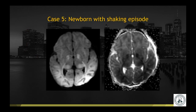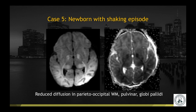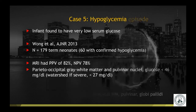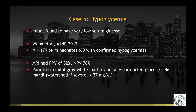Case number five is a newborn with a shaking episode. Diffusion and ADC map demonstrate reduced diffusion in the parietal and occipital white matter, the pulvinar nuclei of the thalami, as well as the globi pallidi. This was a case of hypoglycemia — the infant was found to have a very low serum glucose. A large cohort study published in AJNR demonstrated that this distribution involving the parietal and occipital lobes as well as the pulvinar nuclei had a positive predictive value of 82% and a negative predictive value of 78%.